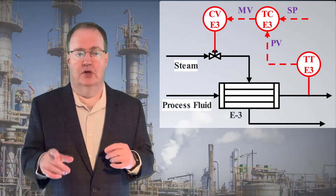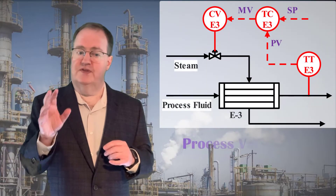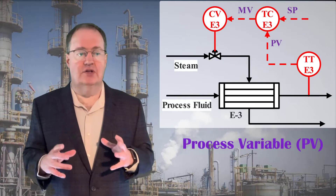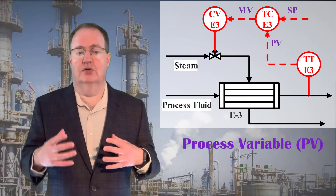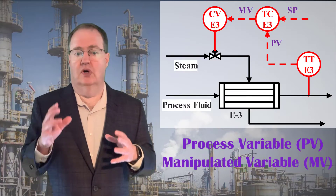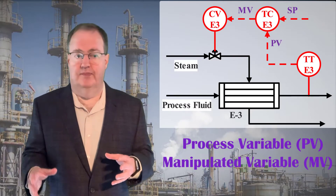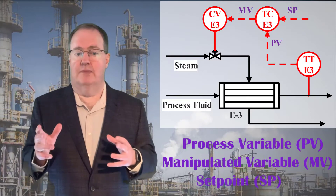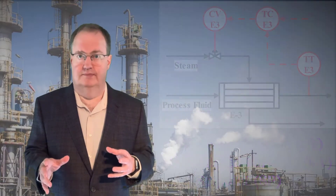First, some terms. The sensor measures the process variable, or PV, and sends a signal to the controller. The controller output signal goes to the manipulated variable, or MV, which is the degree of freedom. The target signal is the set point, marked SP on the diagram.